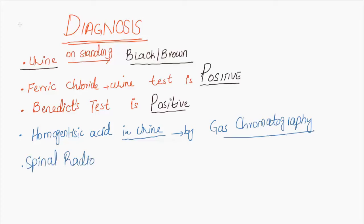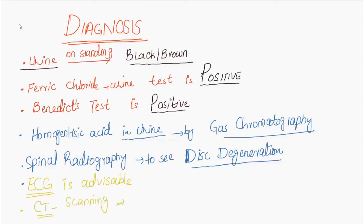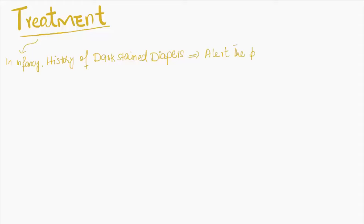Spinal radiography of the lumbar region shows disc degeneration. ECG is advisable when any sign of myocardial insufficiency is present. CT scanning provides evidence of coronary artery calcification.